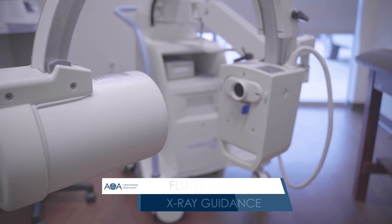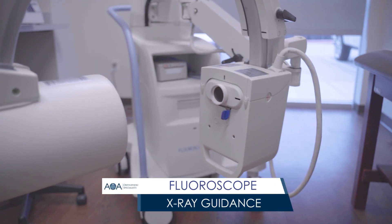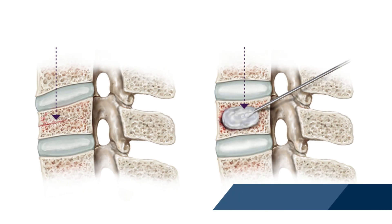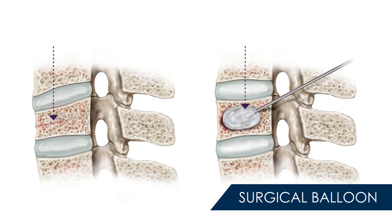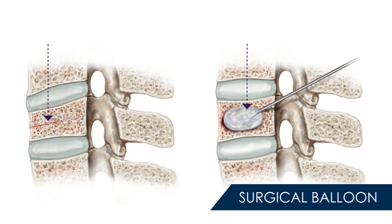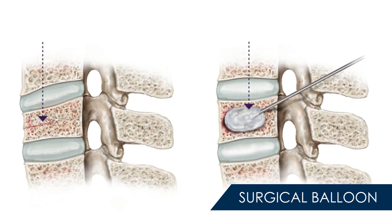Using an x-ray guidance system called a fluoroscope, the surgeon will insert a needle into the fractured vertebrae and inflate a small surgical balloon. This restores the vertebrae's shape and relieves the source of pain.